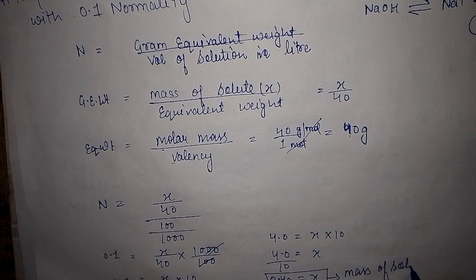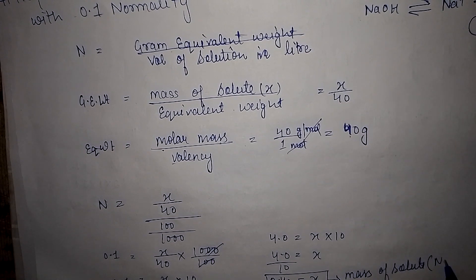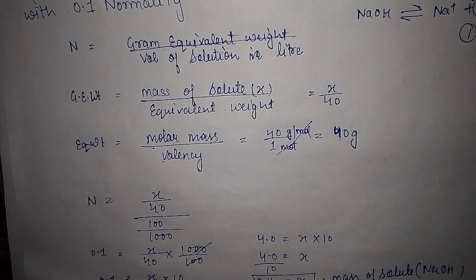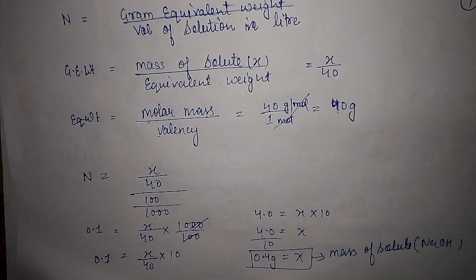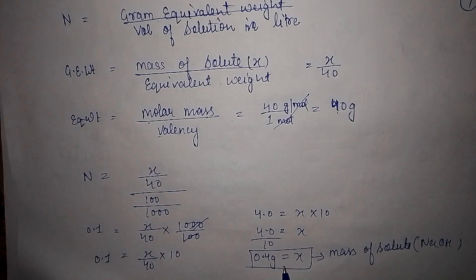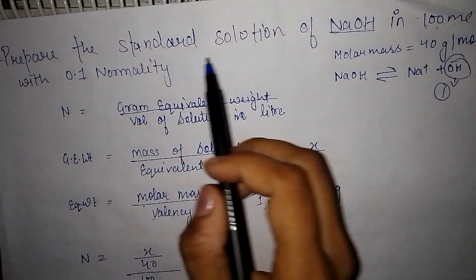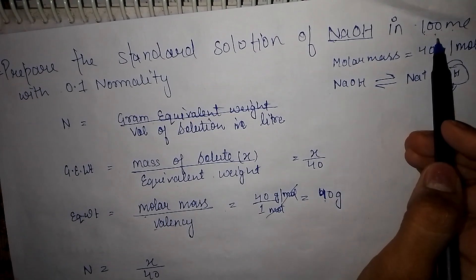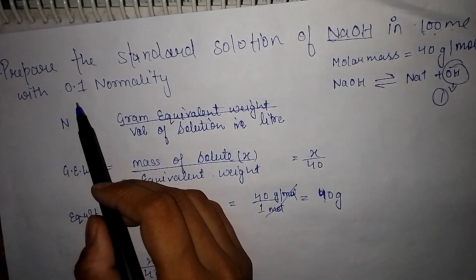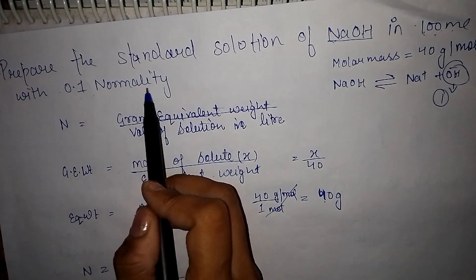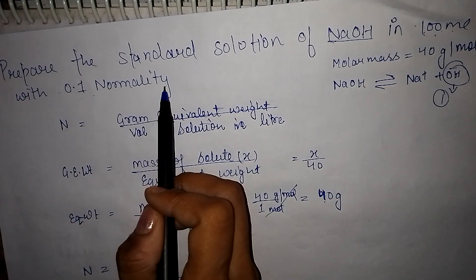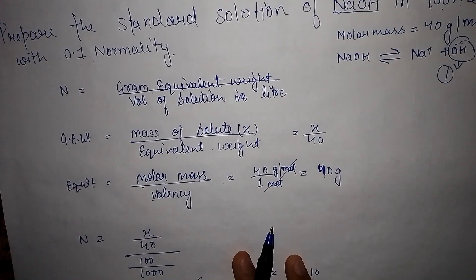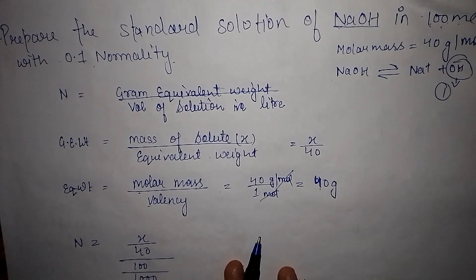So 0.4 grams of NaOH will be required to make a standard solution of NaOH in a 100 milliliter standard flask with 0.1 normality. Thank you for watching.